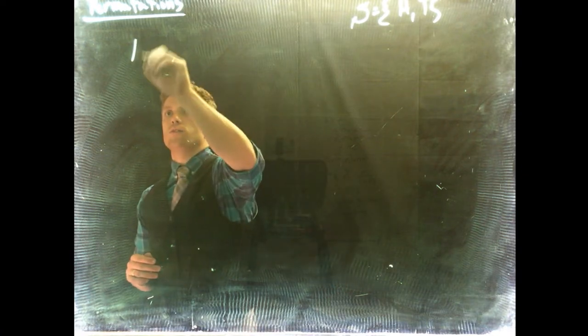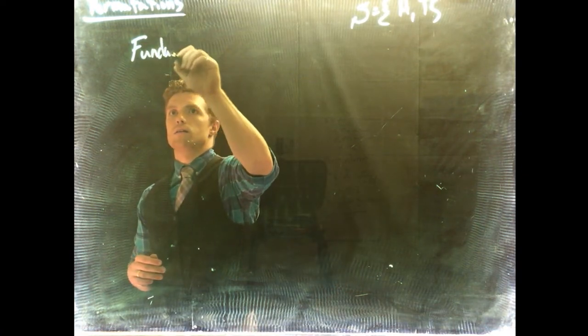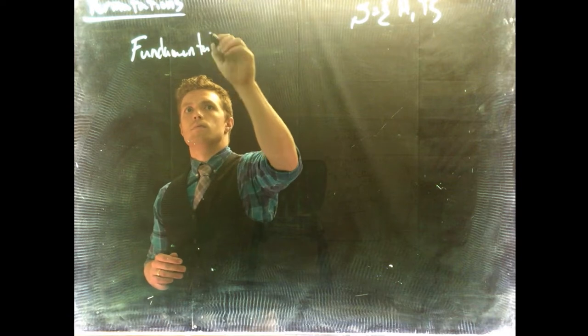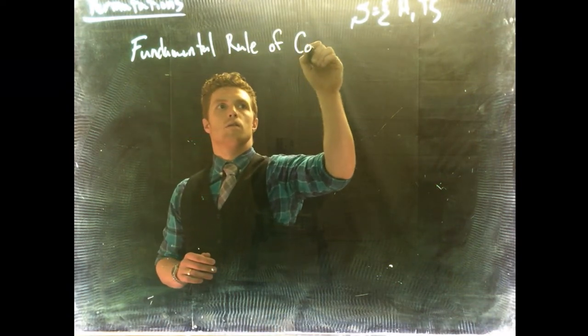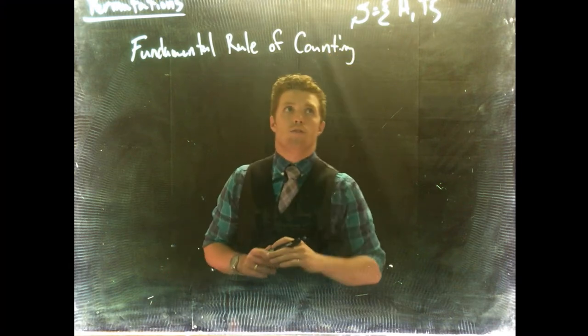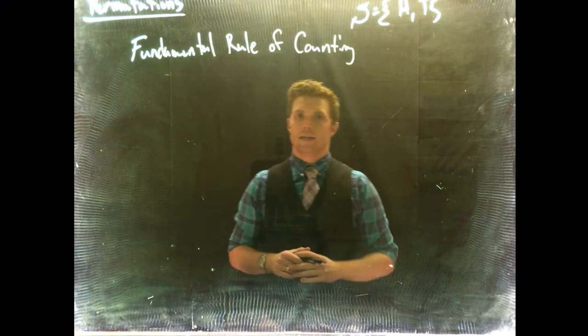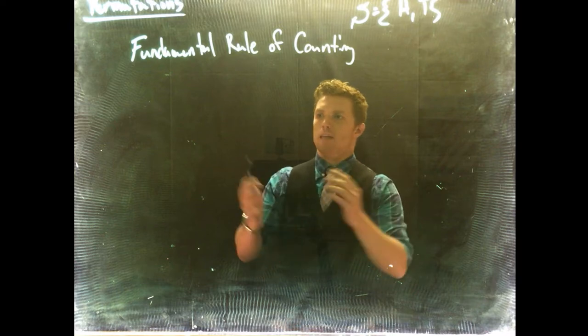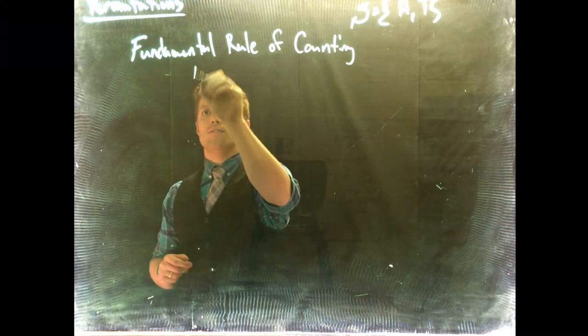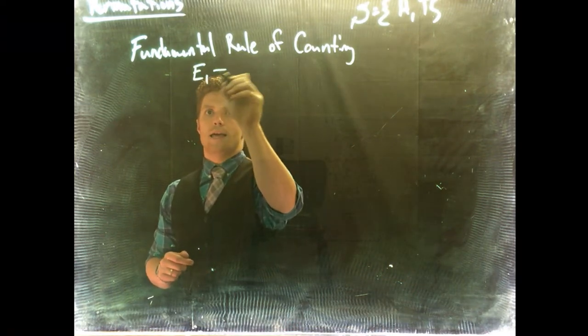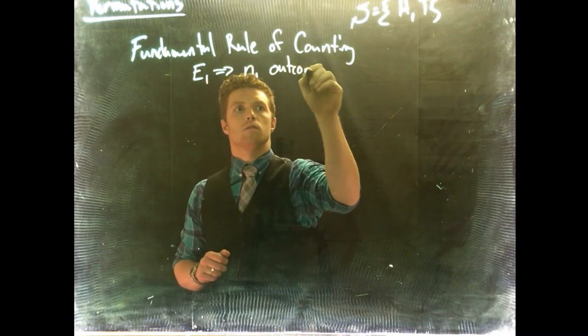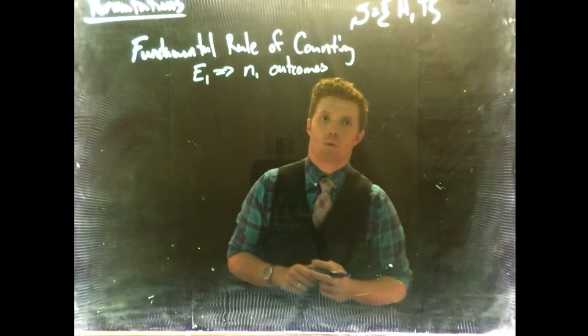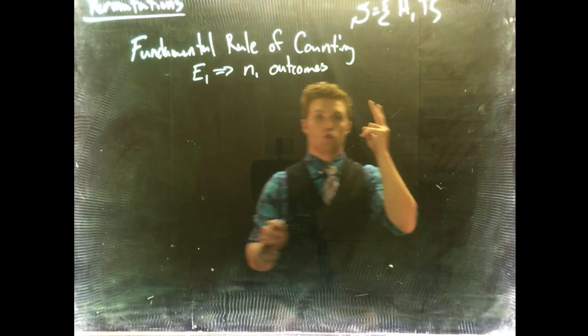So let's start off with a rule that we can use to our advantage, and it's called the fundamental rule of counting. The fundamental rule of counting basically comes down to this. If we have an event one and it has n1 outcomes, we're going to flip a coin, it has two outcomes.